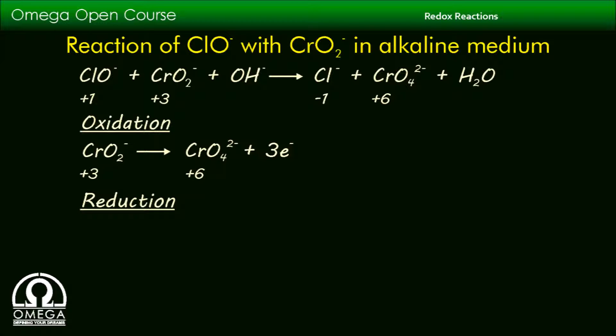In the reduction half, ClO⁻ is converted into Cl⁻. Oxidation number decreases from +1 to -1 and 2 electrons are absorbed in this process.